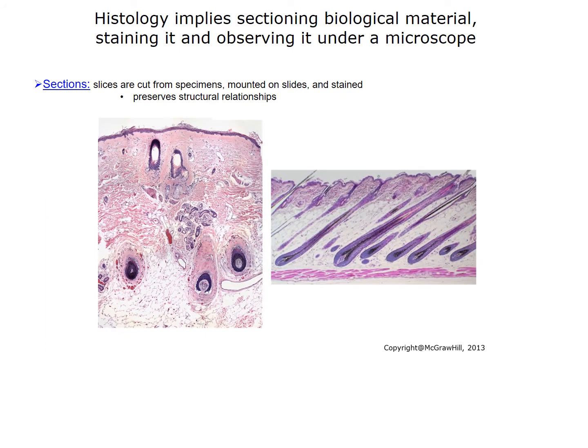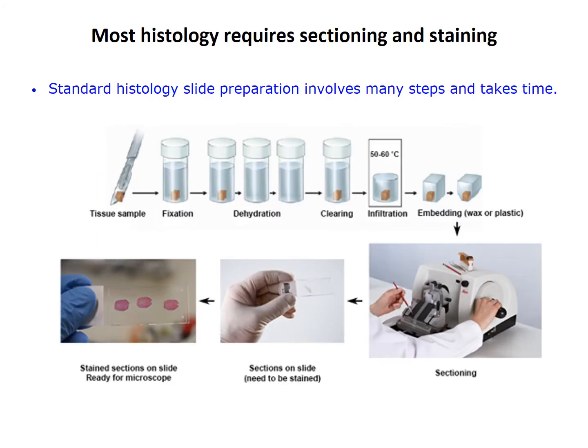Histology implies sectioning biological material before staining and observing it with a microscope. Here you see several sections taken from human skin, and in the section on the right, you can see a number of different hair follicles. A typical sample preparation involves several steps and takes time, from many hours to more than a day, depending on the urgency with which results are needed. Starting on the left with obtaining a sample — this may be a small piece of tissue removed from the body, a biopsy, or a small portion of a larger piece removed during surgery. Samples are small, both to speed up the subsequent processes, which are diffusion limited, and because only small areas are needed for observation.